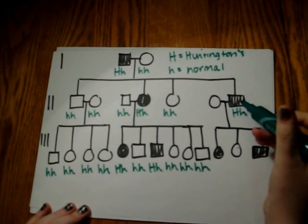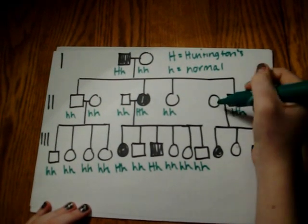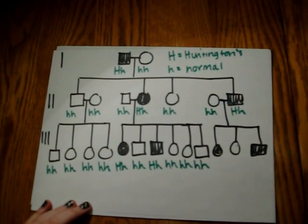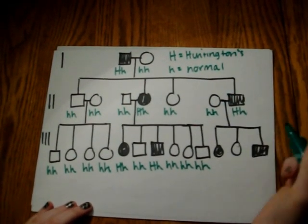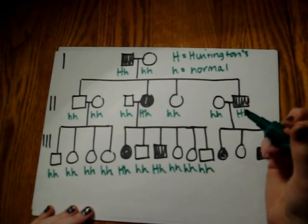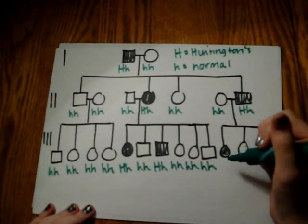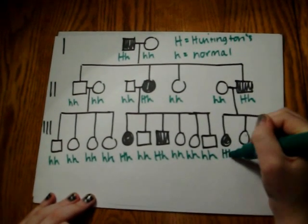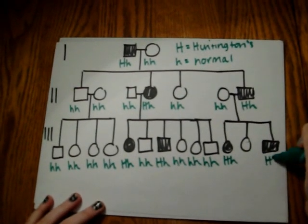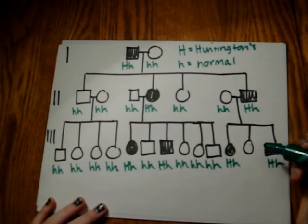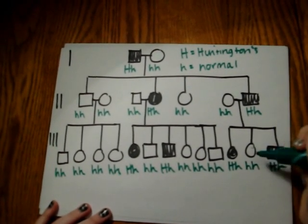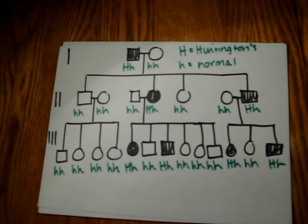And this offspring mates with an unaffected female, who is hh. They have three offspring. Two of them are going to be Hh because two of them are affected, and one is going to be hh because it is unaffected.